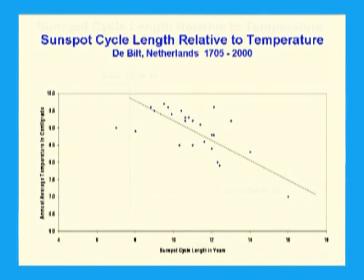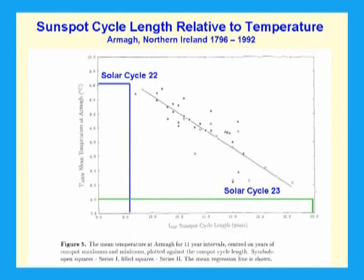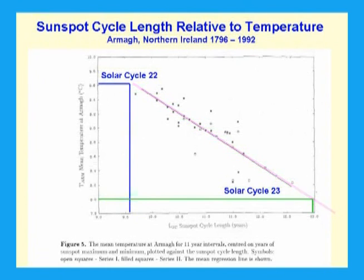This is a figure from a 1996 paper by Butler and Johnson of the Armagh Observatory. The slope of the line is half a degree centigrade per one year change in solar cycle length, which amounts to 1.4 thousandths of a degree per day.